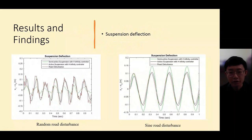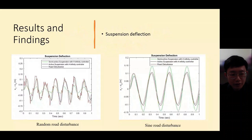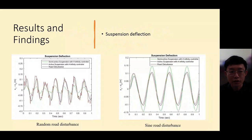For suspension deflection, the graph for the active suspension system is very close to the road disturbance, which means the suspension can provide very good comfort and stability to the vehicle. From this research, after adding the H-infinity controller to the suspension system, the active suspension system becomes more responsive and has better performance compared to the semi-active type. This H-infinity controller can be applied to new suspension system designs. That is all for journal 3.